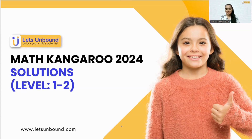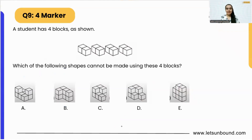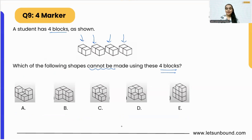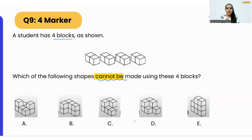The question is really interesting. A student has four blocks as shown — which of the following shapes cannot be made using these four blocks? We can see there are four blocks provided, and we need to make these shapes using those four blocks. There is one shape which is not possible to be made, and we have to find that specific shape.